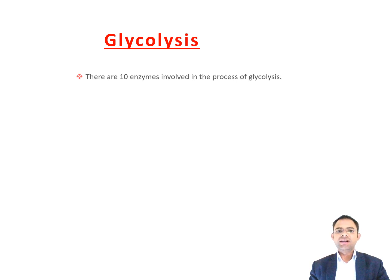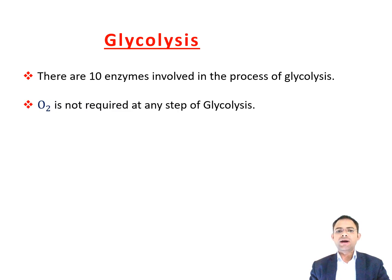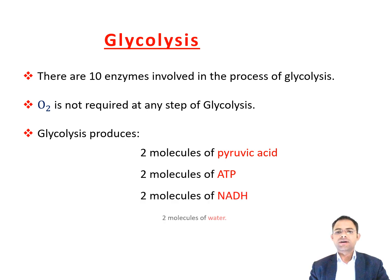There are 10 enzymes involved in the process of glycolysis. Oxygen is not required at any step of glycolysis. Glycolysis produces two molecules each of pyruvic acid, ATP, NADH, and water.